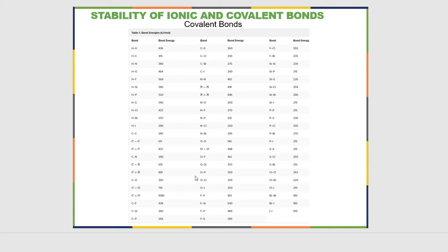In this table we have the stability of covalent bonds based on what is called the bond energy. The bond energy is the energy required to break the bond. So the more energy that it takes to break the bond, the more stable it is. This is a table of various bond energies, and I want to look at some specifically.